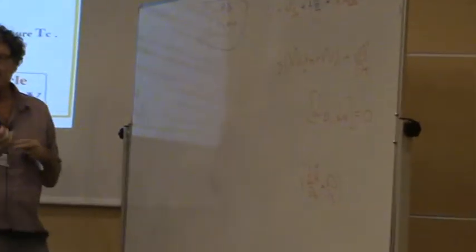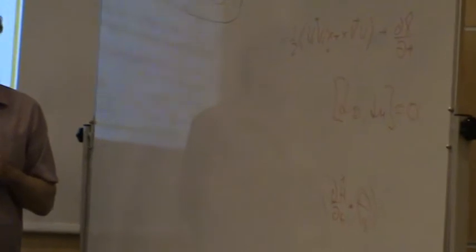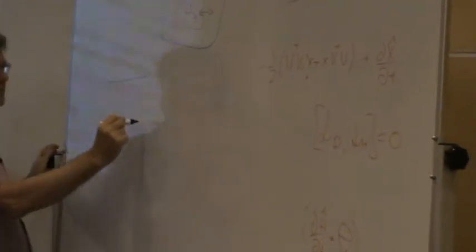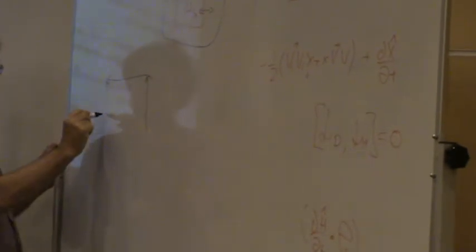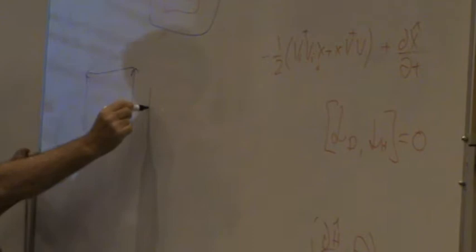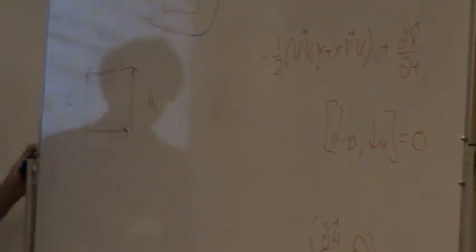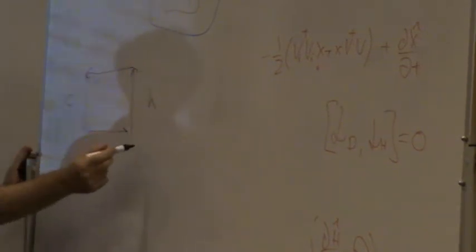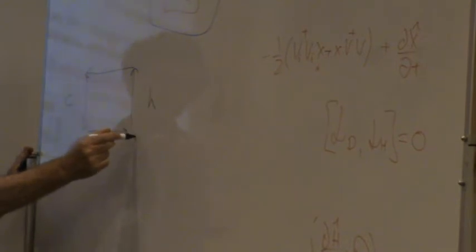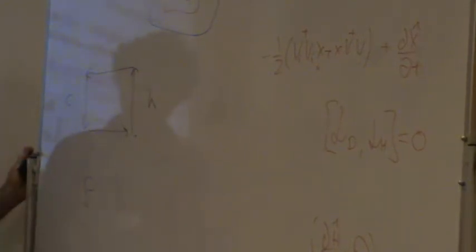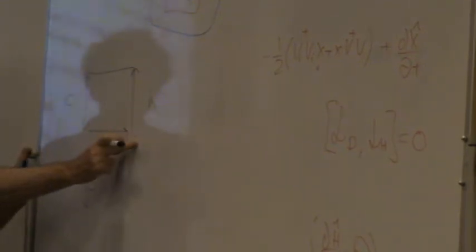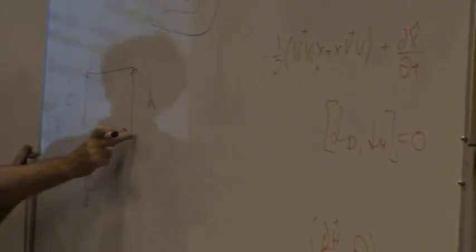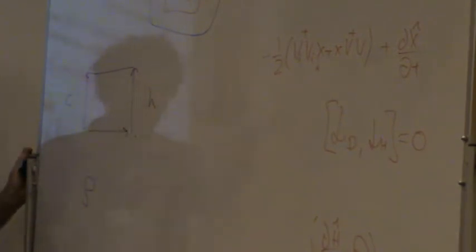Now I want to describe an Otto engine in an abstract way using the tools of open quantum systems. Here's my cycle: a hot side and a cold side. My working fluid is described by a density matrix — it could be a harmonic oscillator, a spin system, or whatever. On the hot side I have thermalization; I'm connected to the hot bath.